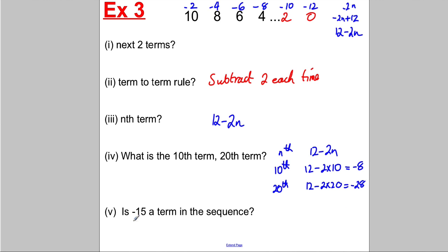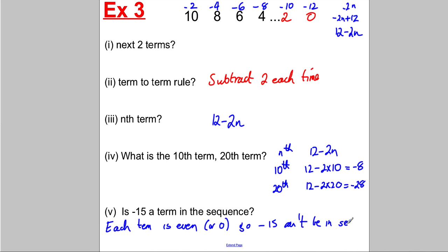Is negative 15 a term in the sequence? The easiest way is to notice that each term is even or zero. So negative 15 can't be in the sequence. You could also keep counting down: 0, -2, -4, -6, -8, -10, -12, -14, -16 — negative 15 never appears, so it's not in the sequence.